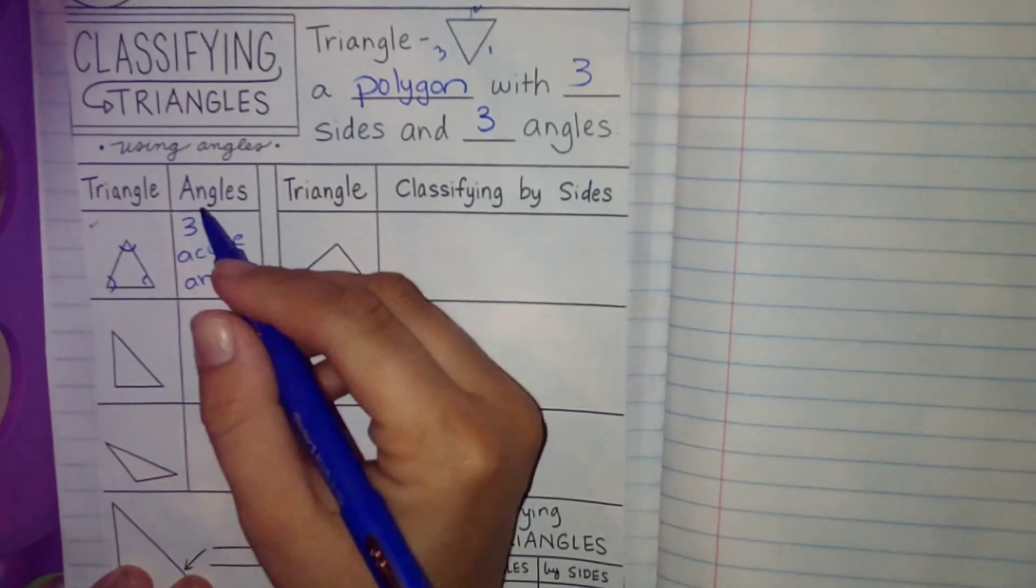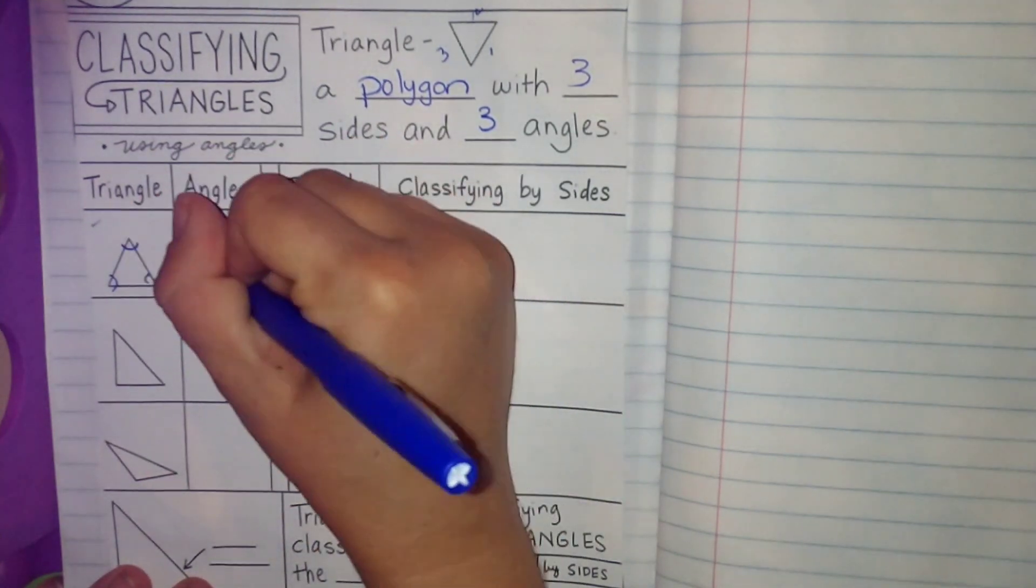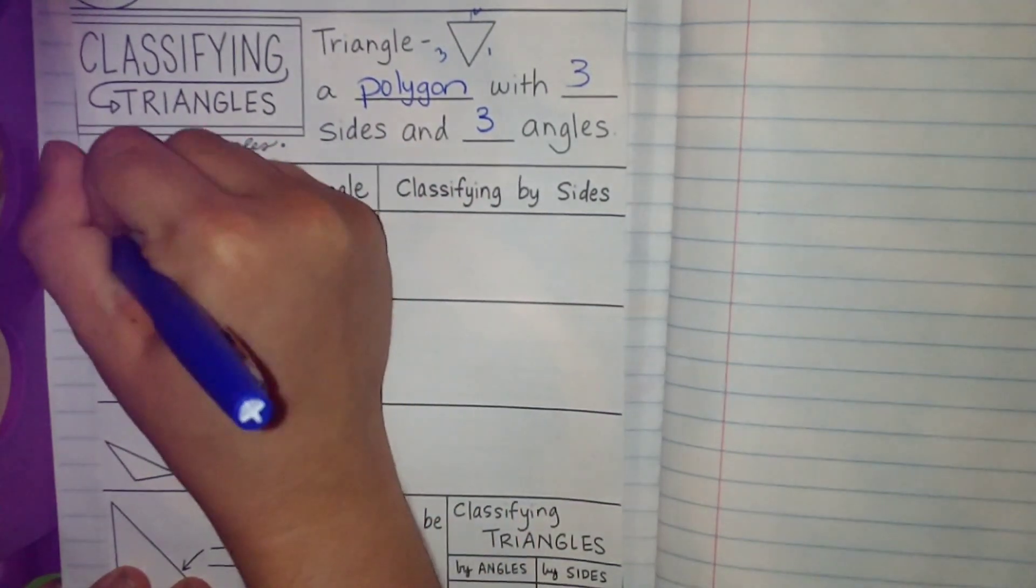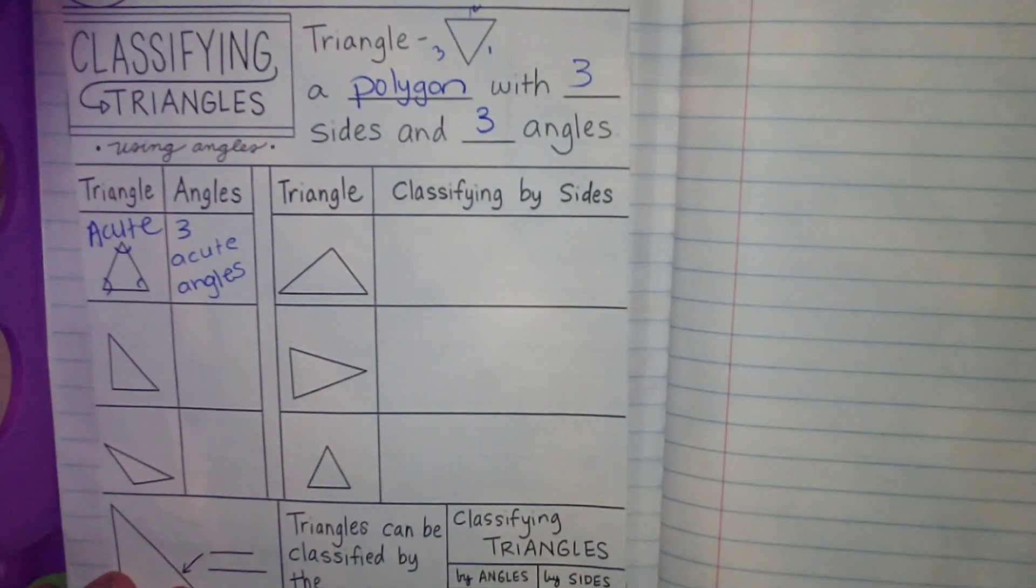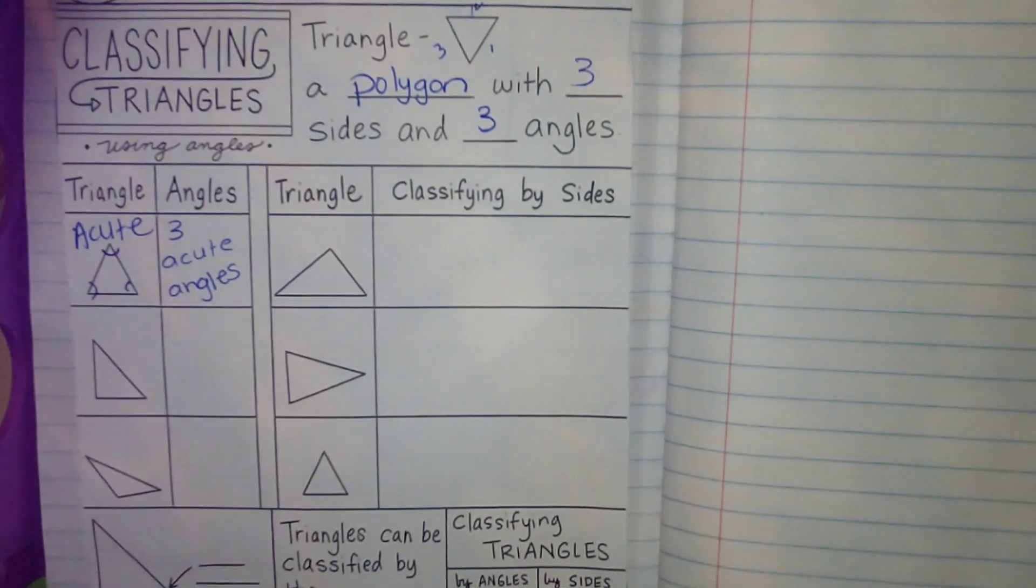Now, remember angles that are acute are so little. They're acute. They are less than 90 degrees. So in an acute triangle, all of the angles are less than 90 degrees.